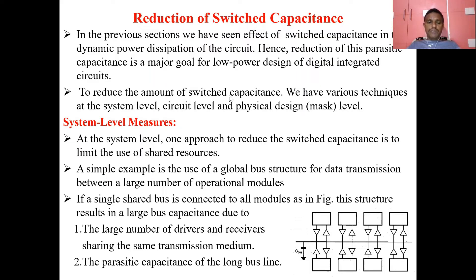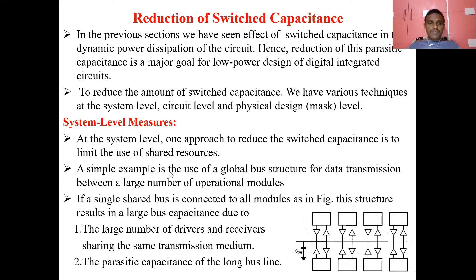So how does the system level reduce the switched capacitance? At the system level, one approach to reduce the switched capacitance is to limit the use of shared resources. To explain this point, I will consider a diagram. A simple example is the use of a global bus structure for data transmission between a large number of operational modules.